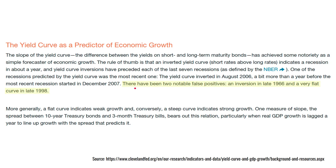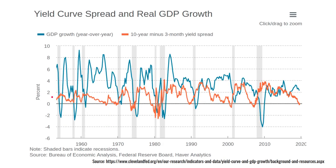Is the model perfect? Certainly not. There have been two notable false positives — in late 1966 the US yield curve inverted but there was no recession, and the same happened in 1998. The orange line shows the steepness of the yield curve, and you can see that when it goes negative there's usually a grey bar — marking a US recession — that follows within a year. But on the whole, when the yield curve inverts, we normally get a recession within one year — it happened in the 1980s, early 1990s, early 2000s, and before the global financial crisis.